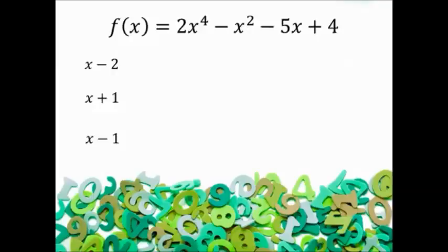In this case, substituting gives f(2) = 22. In order for the binomial to be a factor, the remainder must be zero. Therefore, x - 2 is sadly not a factor.